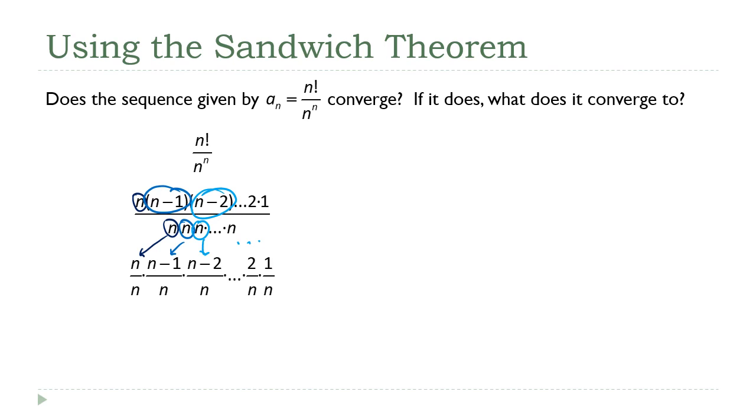So if I just eliminate every term here and just keep this last one, what effect does that have? Well, 1 over n is going to be bigger than what I had before because I'm not multiplying it by all of these small numbers anymore. So my original formula is less than or equal to 1 over n.